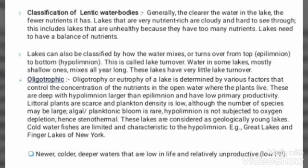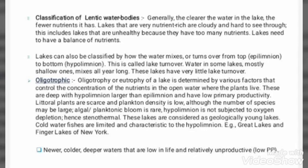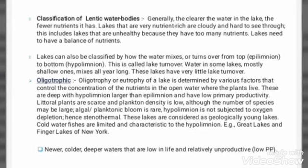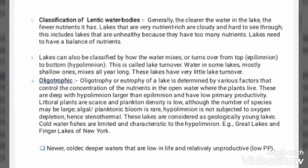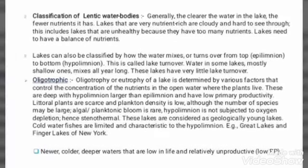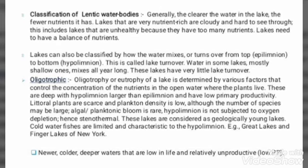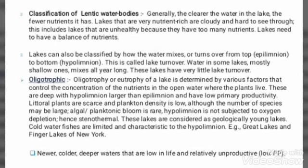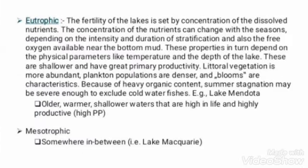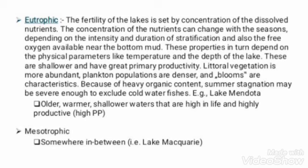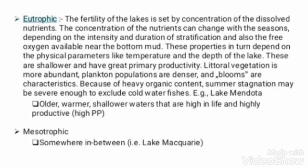The oligotrophic or eutrophic nature of a lake is determined by various factors that control the concentration of nutrients in the open water. Oligotrophic lakes are deeper, with a hypolimnion larger than the epilimnion, and have low primary productivity. These water bodies are newer, colder, deeper waters that are low in life and relatively unproductive.